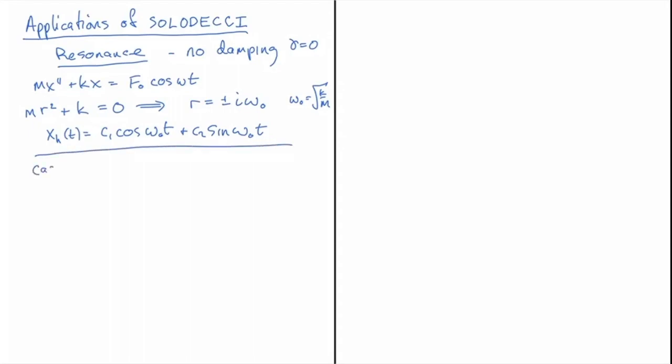The first case is with omega not equal to omega naught, and this is the simpler one because there's no conflict between the forcing term and the homogeneous solution. And so our xp in this case is going to be A cosine omega t plus B sine omega t. And we could leave out that B sine omega t if we notice that there's no y prime term here. But if you leave it in, what you'll find, and I'm not going to go through this, but you can go through the calculation and check it yourself.